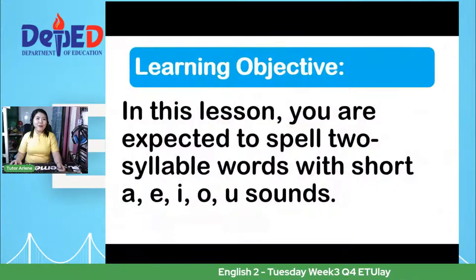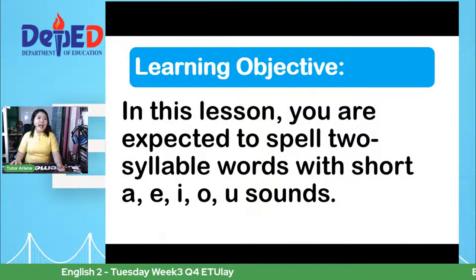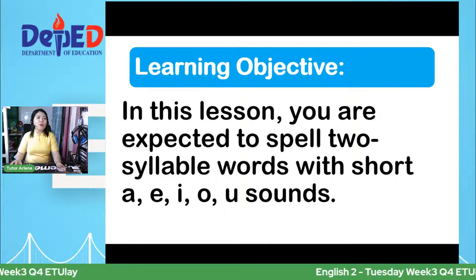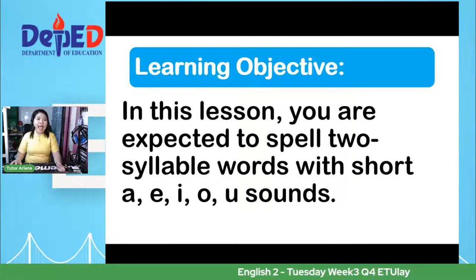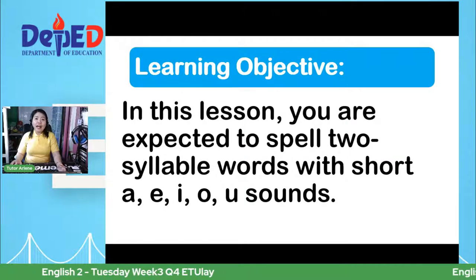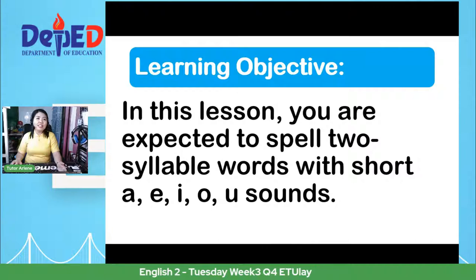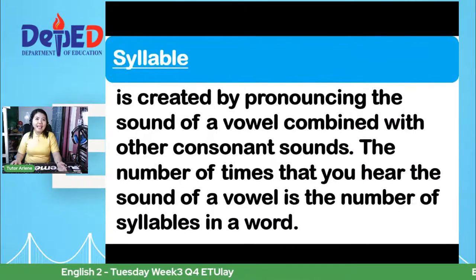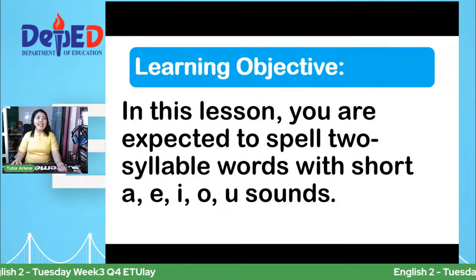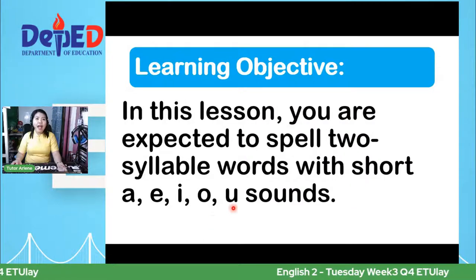Today you will learn how to spell 2-syllable words with short A, E, I, O, U sounds. This is very easy for you today because it is short sounds only! So we have the A — open your mouth, A — and then E — smile, E — O, and U. U has two sounds: U and A.